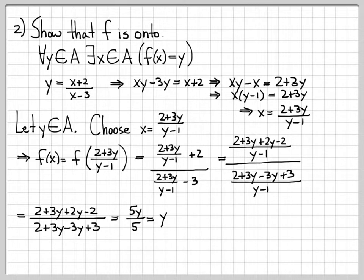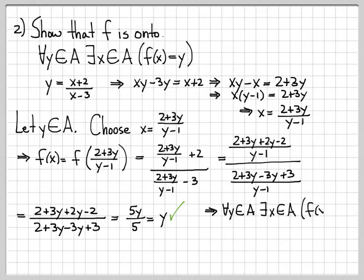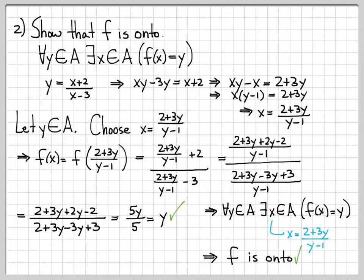We have found a value x such that when we evaluate the function at that point, we get y. So we have shown that for any y in A, there exists an x in A — specifically x = (2 + 3y)/(y - 1) — such that f(x) = y. Therefore, f is an onto function.